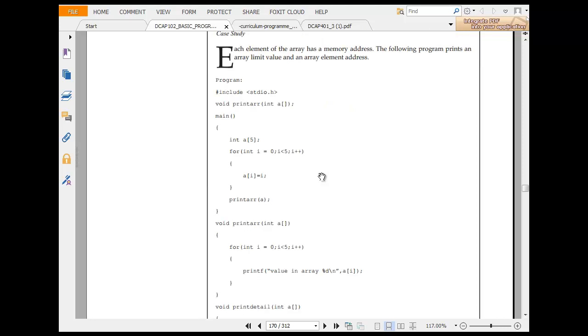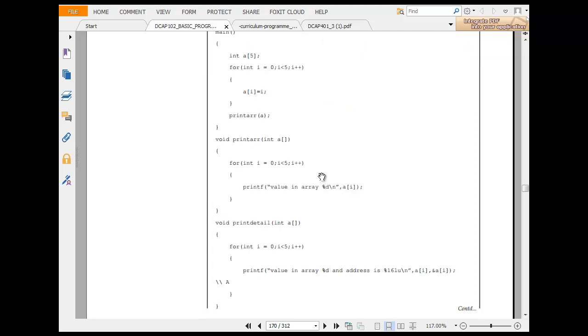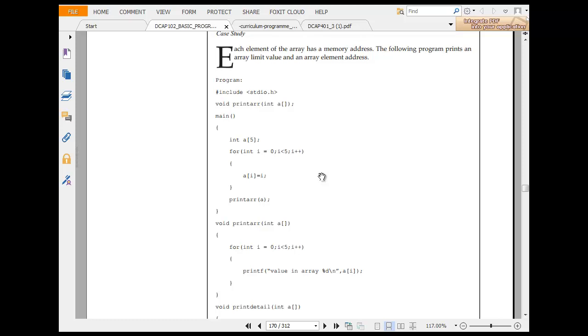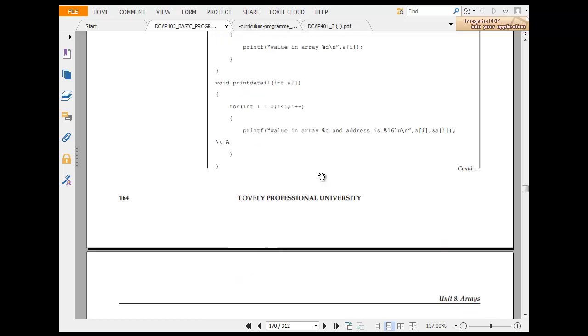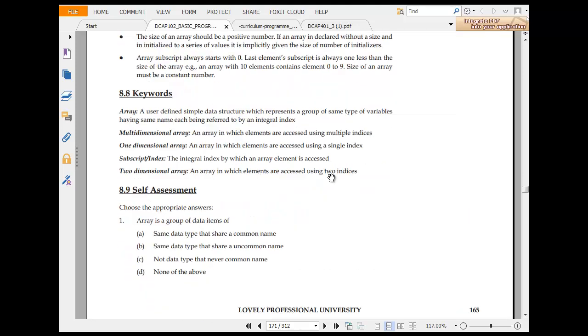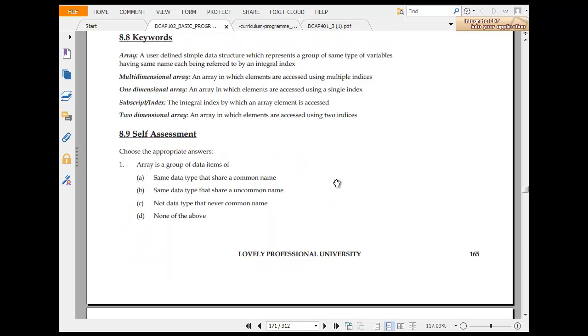Each element of the array has memory address. The following program prints array. So include void, printf, integer, all main. So multidimensional is subscript where array is accessed. So it's called subscript or index.